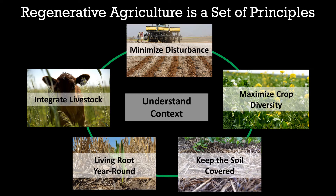The first principle is to understand context. No two farms or farmers are the same. What works for a farmer in Minnesota might not work for another farmer down the road, let alone one in California. The key to success is understanding the context of a given field — its soils and climate, its constraints and opportunities — and then developing a plan to integrate the other principles based on that context.